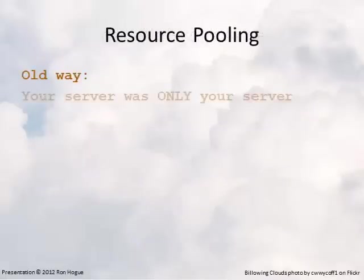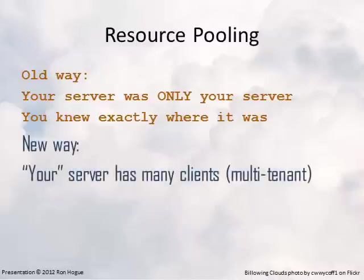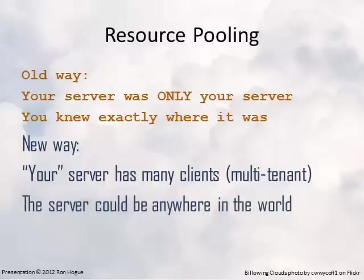Next is resource pooling. We used to have one server that was just ours — nobody else touched it, we knew exactly where it was, in a specific rack, in a specific location. Now your server might have many clients. We talk about it being multi-tenant or having multi-tenancy, meaning your information sits right beside someone else's on the same server, sharing CPU and other resources. It's not dedicated just to you. In a public cloud, your server is shared and could be anywhere on the planet — you don't necessarily know where it is, and that could be a risk. In a private cloud, we have dedicated resources.